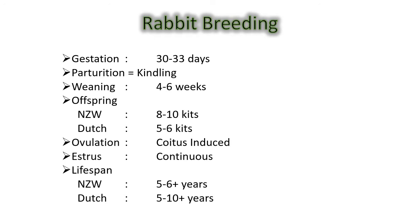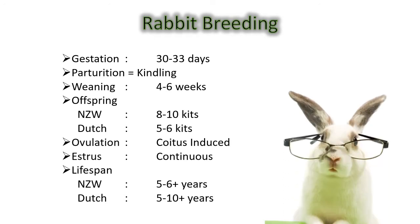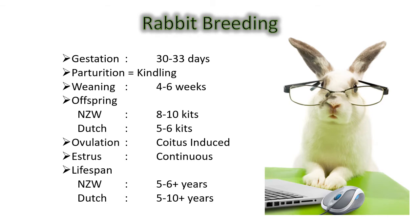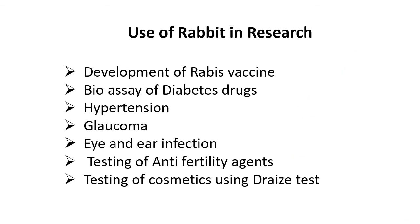Weaning occurs after four to six weeks depending on the species. The New Zealand species gives eight to ten offspring, whereas the Dutch breed gives five to six. Rabbits exhibit coitus-induced ovulation. The lifespan is five to ten years. Rabbits are used in vaccine development, bioassay of diabetes drugs, hypertension, glaucoma, eye and ear infection testing, testing of anti-fertility agents, and cosmetics testing using Draize cell tests.